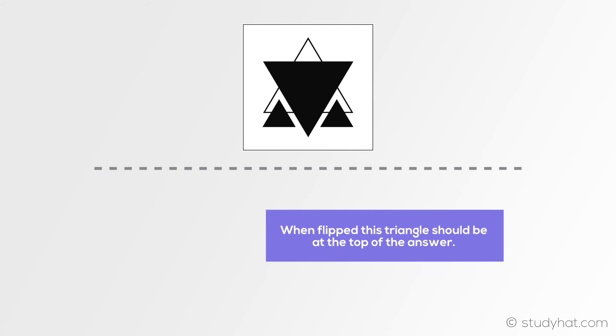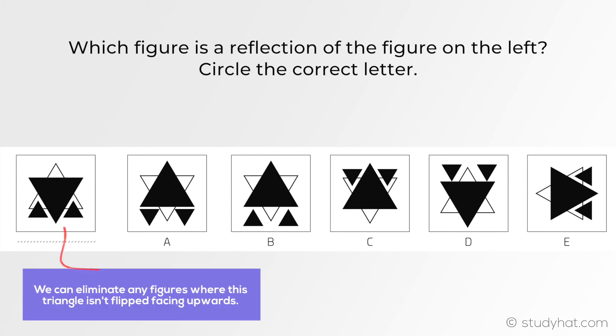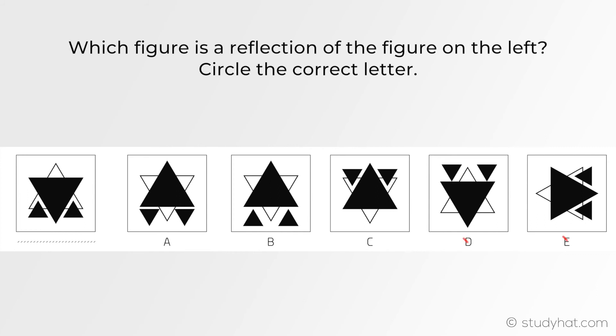Remember the shape and size doesn't change just the position. If you flip a triangle facing downwards the opposite of that is upwards therefore both D and E can be eliminated as they are not facing upwards. I've also spotted that B has its triangle completely spread out so that can't be the answer either.